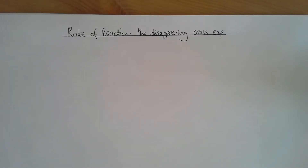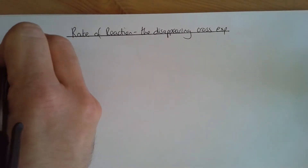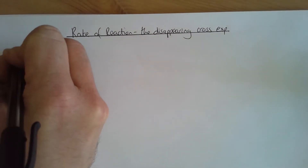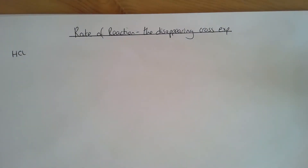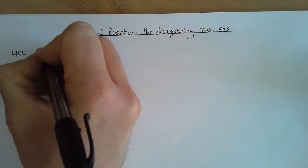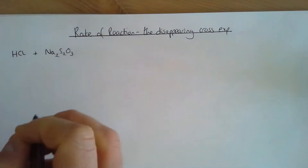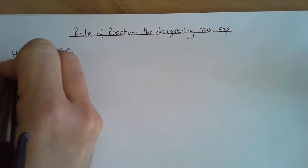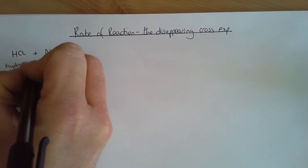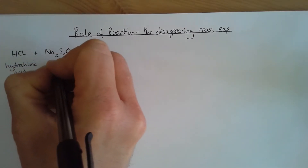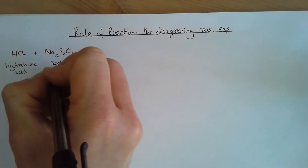We're going to look at our second rate of reaction experiment, called the disappearing cross. First, we'll deal with what actually happens during the chemical reaction. This reaction takes place between two chemicals: hydrochloric acid and sodium thiosulfate.